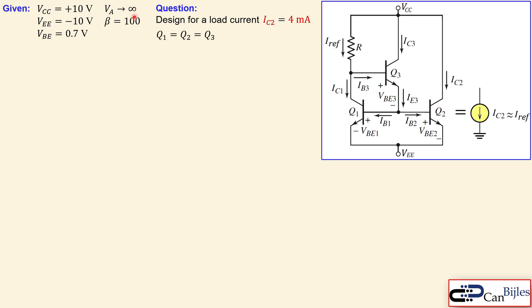All three transistors are matched — they have the same Early voltage, which is infinity in this case, the exact same beta, and the same physical dimensions like the emitter area. We have two voltage sources: VCC and VE, with values of +10 and -10 volts. The VBE for all transistors is assumed to be 0.7 volts. We will design for a load current IC2 of 4 milliamps.